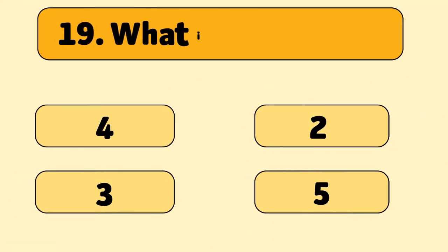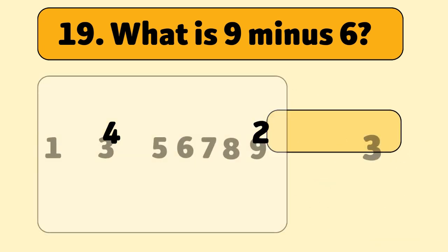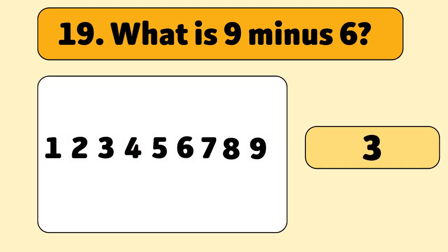What is nine minus six? Three. Start with nine and take away six, and we're left with three.